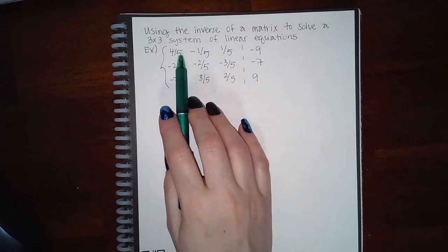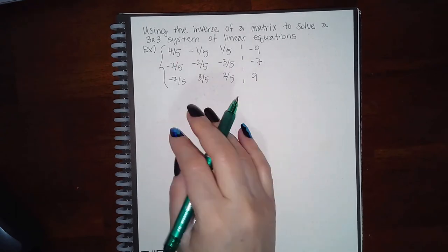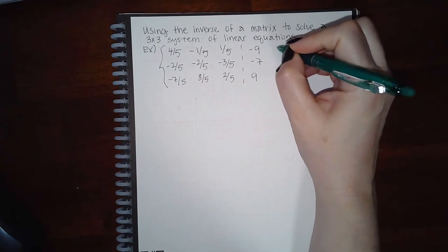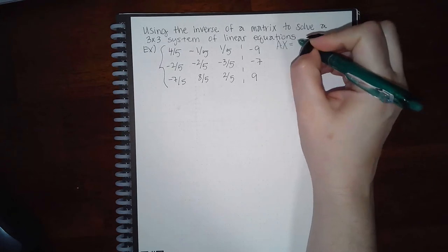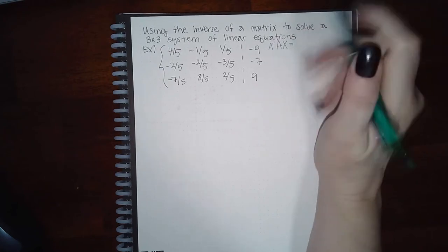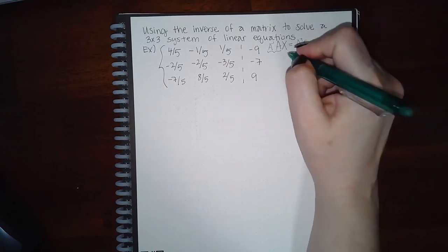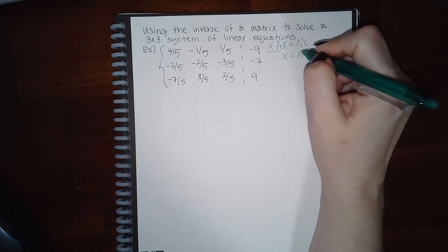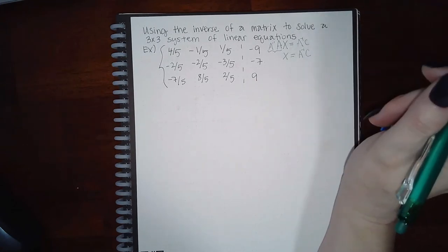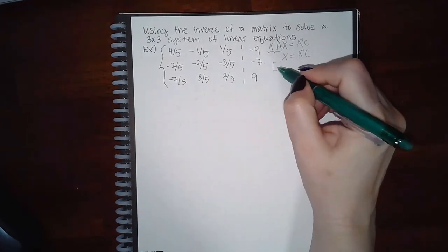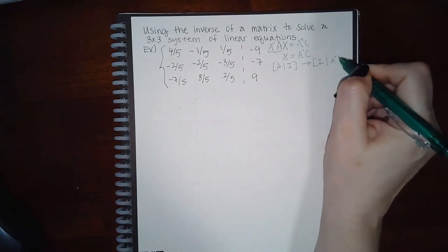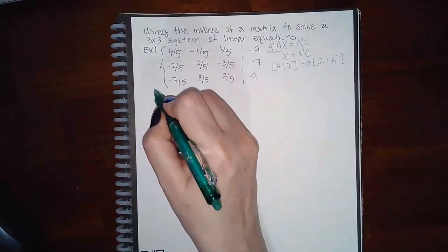This is the last example we skipped over in module 51, so we're going to cover it now. It wants us to use the inverse of the matrix to solve the three-by-three system. Once I have the coefficient matrix times the variable matrix equal to the constant matrix, I can apply the inverse on both sides. This cancels out, leaving the variable matrix equal to A-inverse times C, the constant matrix. So I need to find A-inverse by setting up [A|I] and converting the left side to the identity.